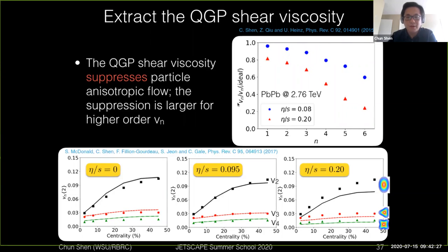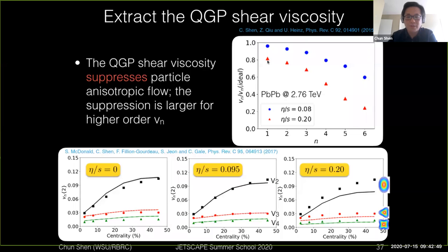Here we plot the VNs from viscous calculations divided by the VNs of the ideal calculations. The blue points correspond to a smaller shear viscosity of around 0.08, and the red points to a larger shear viscosity of 0.20. As you can see, when shear viscosity is increased, this ratio goes down, meaning the VN coefficients are suppressed. The higher-order VNs — V4, V5, and V6 — show much smaller ratios, meaning they are more sensitive to viscous effects and more suppressed at finite shear viscosities.